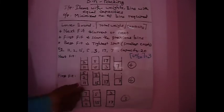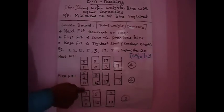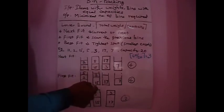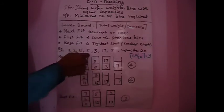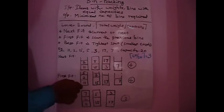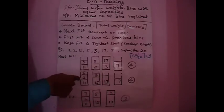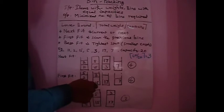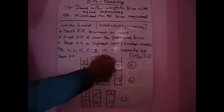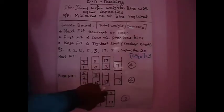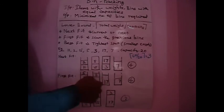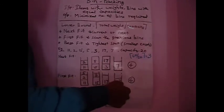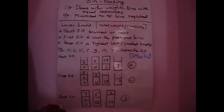First Fit walkthrough: item 1 (weight 11) in bin 1, item 2 (weight 2) in bin 1. Item 3 (weight 15) cannot fit in bin 1, so it goes to bin 2. Item 4 (weight 5) — scanning previous bins — bin 1 has empty space of 7, so 5 is placed in bin 1. Item 5 (weight 3) cannot fit in bin 1 (would exceed capacity), so it goes to bin 2. Item 6 (weight 17) cannot fit, so a new bin is used. Item 7 (weight 7) cannot be accommodated in any previous bin, so bin 4 is used.